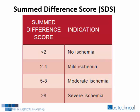The summed rest score is the summed total of each individual segment score obtained during the rest study. The summed difference score, which indicates the amount of ischemia and the degree of defect reversibility, is the difference between the summed stress score and the summed rest score. A summed difference score less than 2 indicates no ischemia. A score of 2 through 4 indicates mild ischemia. A score of 5 through 8 indicates moderate ischemia. And a summed difference score greater than 8 indicates severe ischemia.